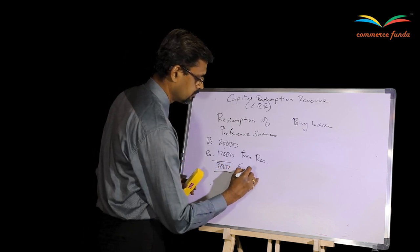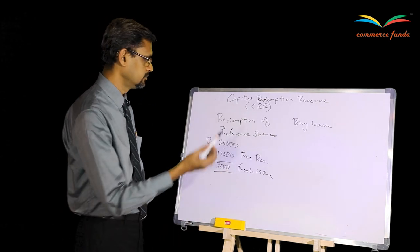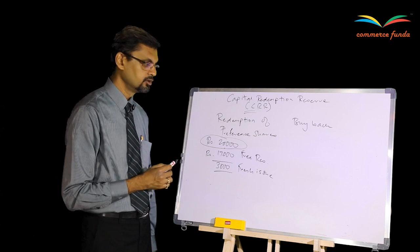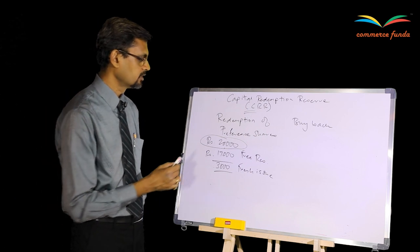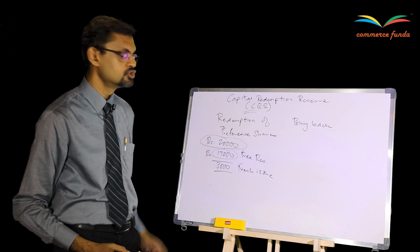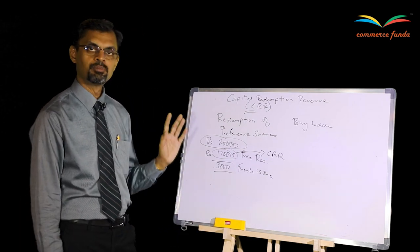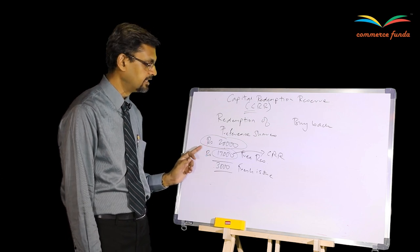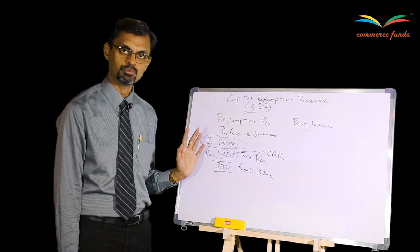...the company will have to go for a fresh issue of ₹3,000, because those are the only two sources. The rule is: the face value of preference shares redeemed not supported by the fresh issue must be transferred to CRR. Out of ₹20,000, ₹3,000 is supported by fresh issue, so ₹17,000 is not supported by fresh issue. That remaining amount — ₹17,000 — has to be transferred to Capital Redemption Reserve.